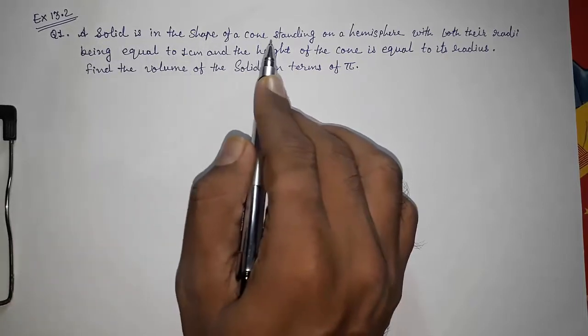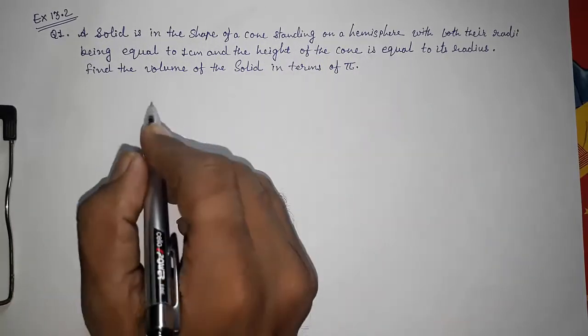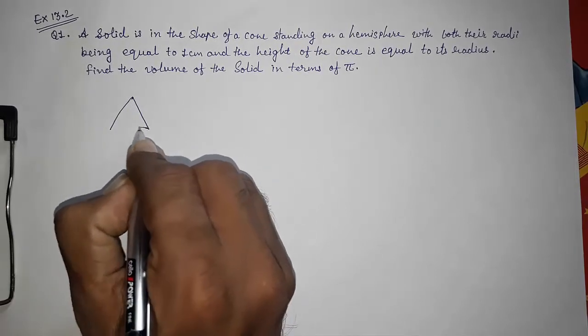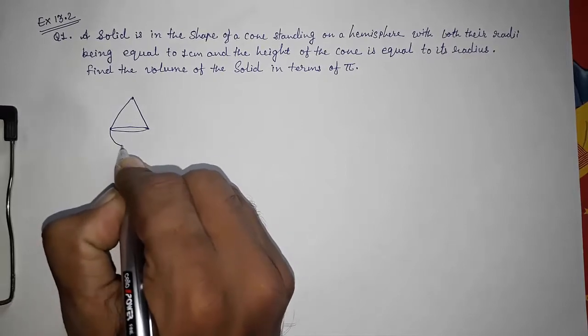A solid is in the shape of a cone standing on a hemisphere. So we are having a cone which is standing on a hemisphere.